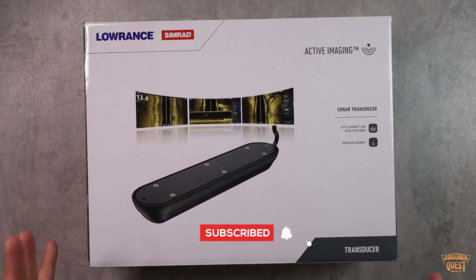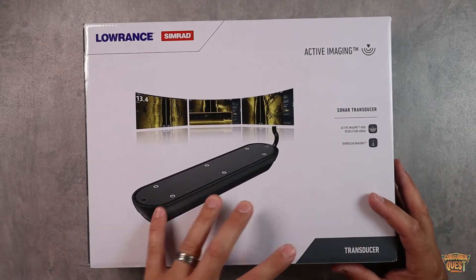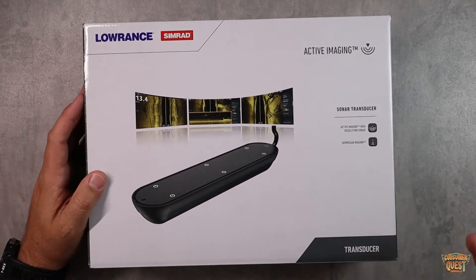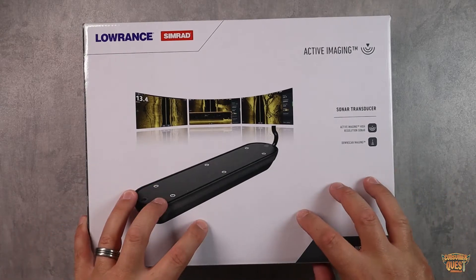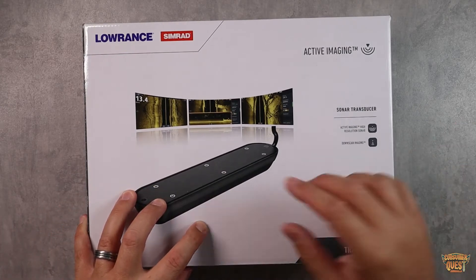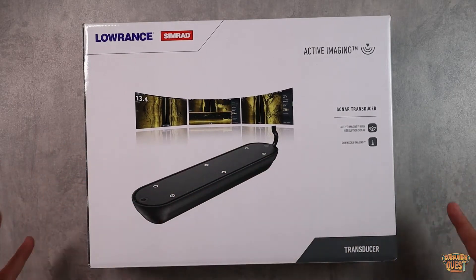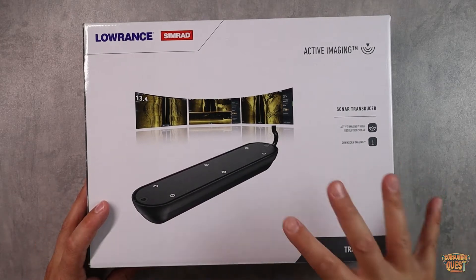This is the highest definition 3-in-1 sonar that includes a traditional chirp, downscan, and sidescan all built in. This is a device that if you already have a Lowrance or Simrad fish finder, regardless of any of the models that you have, this is going to give you the highest end ability on those models to be able to get everything that you can out of them. So this is one of their highest end transducers that you can buy.